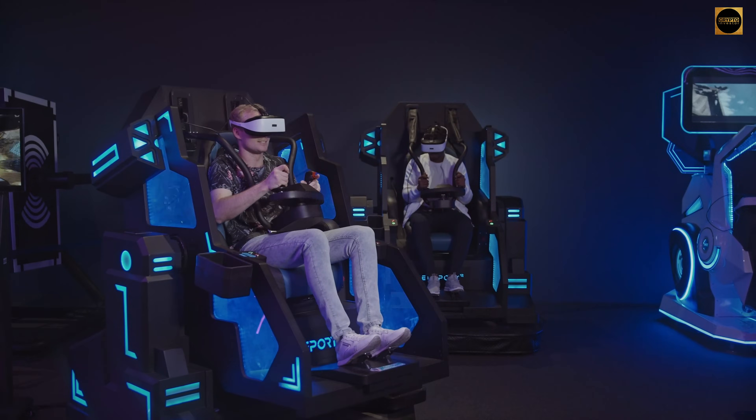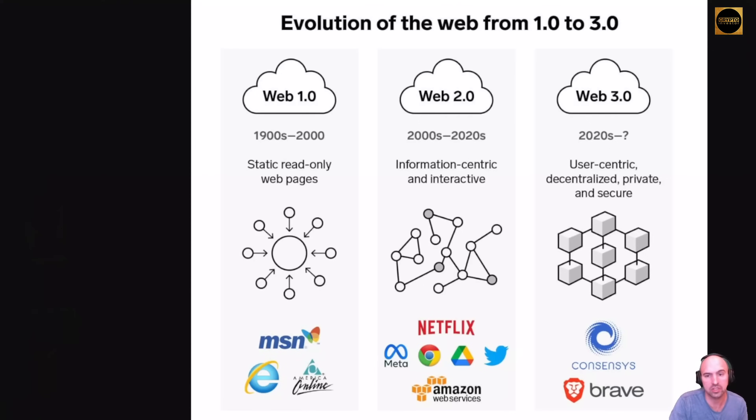Web 3.0 is more decentralized — it's not controlled by any single entity but by the masses. It can be decentralized and private, and it's where you own your own assets. It features transparent record-keeping and is a good way to monitor who sees your data and who doesn't, making it more of a privacy-focused experience for the end user.